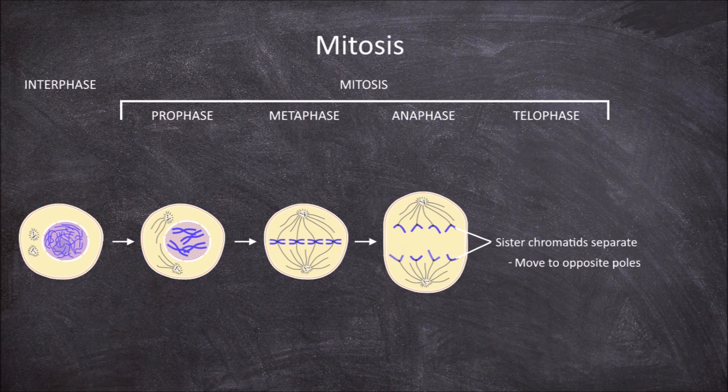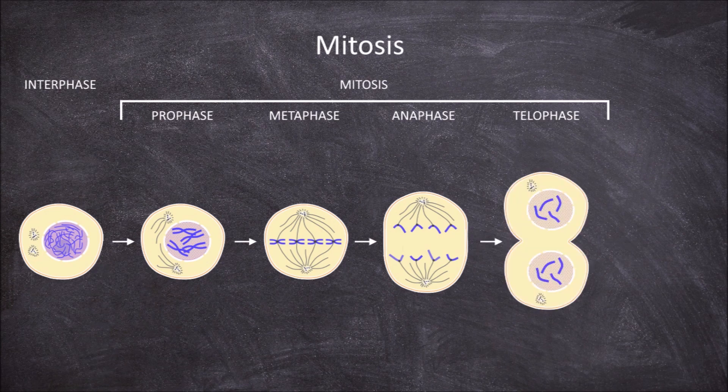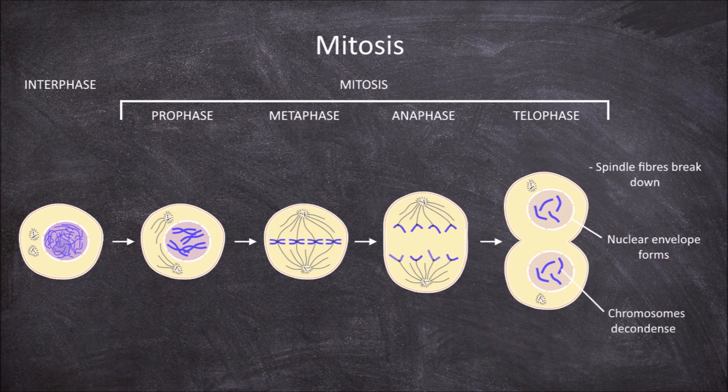The fourth phase in mitosis is telophase. During telophase, now that the sister chromatids are separated onto the opposite poles of the cell, the spindle fibres break down. The nuclear envelope reforms around each set of chromosomes, which re-separate the genetic material from the cytoplasm in the cell. These chromosomes also decondense back into an expanded form of chromatin during telophase.